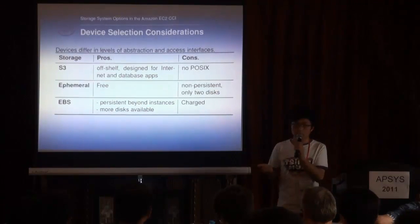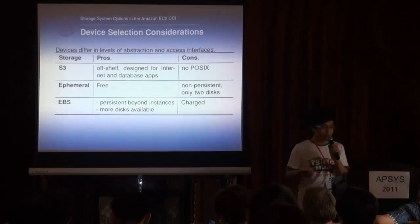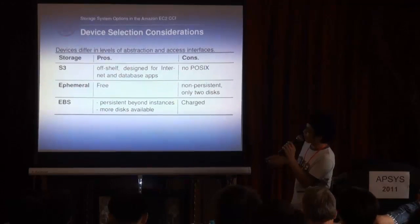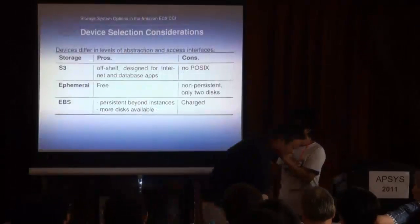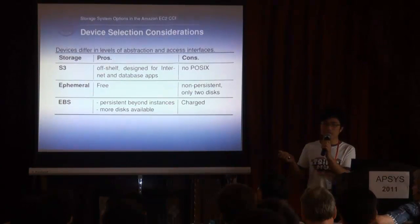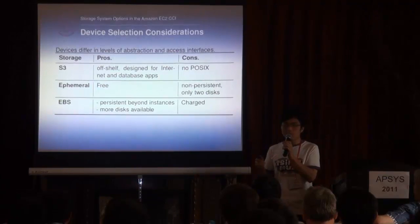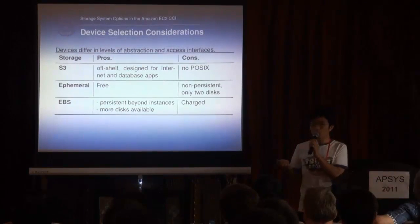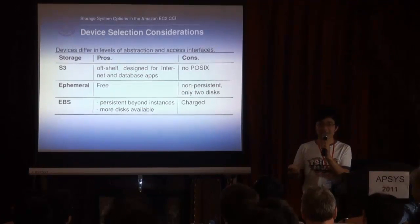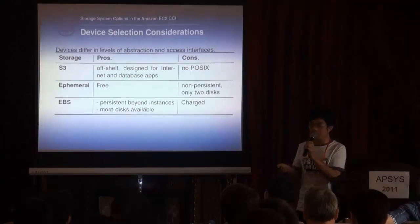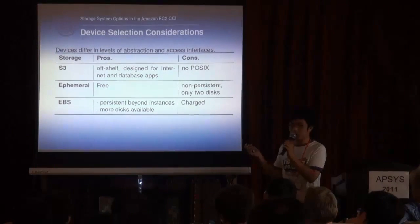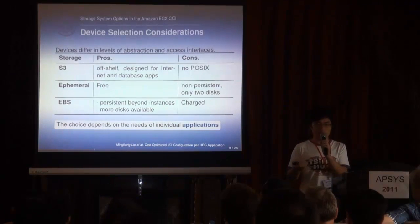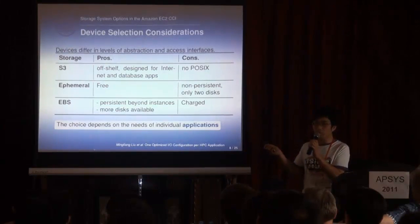The second storage system option is device selection. Here are some considerations when choosing devices. This table illustrates the properties of the three kinds of devices. Since S3 is dedicated for internet and database applications, we cannot employ it for HTC applications directly. Ephemeral storage is free, but not persistent. If we want to hold data that are repeatedly processed, such as a search index, we should put them in EBS. But EBS is not free — it is charged. So the choice depends on the needs of individual applications. There is no silver bullet.